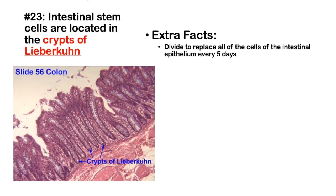Number 23: Intestinal stem cells are located in the crypts of Lieberkühn — the divots at the bottom of the intestinal lining. These stem cells divide to replace all cells of the intestinal epithelium every five days. The crypts of Lieberkühn are found in both the small and large intestine, and are particularly susceptible to chemotherapeutic agents because of the high epithelial cell turnover.